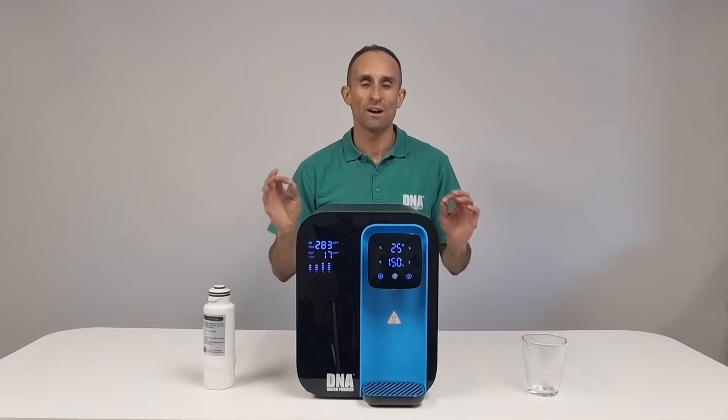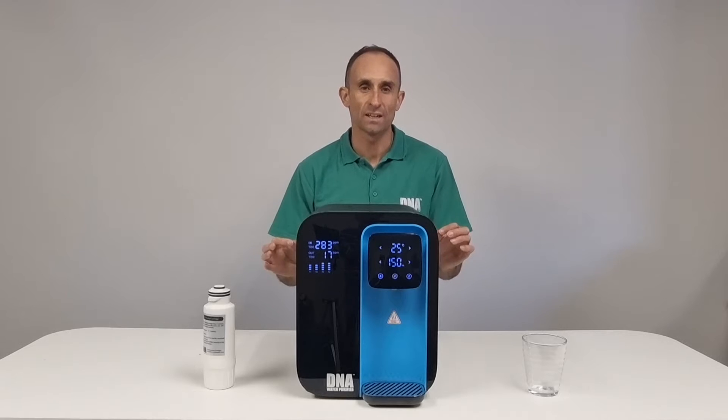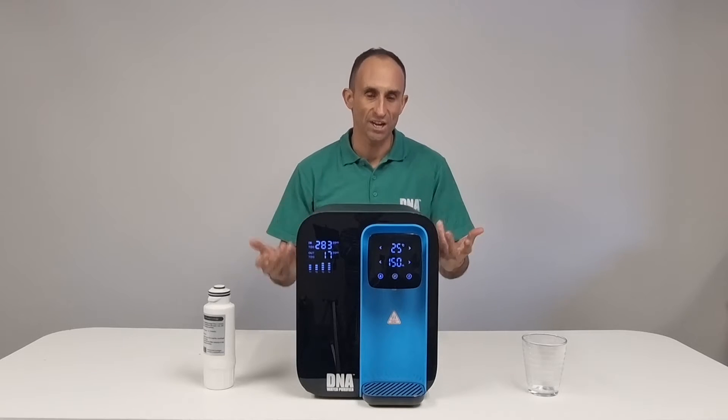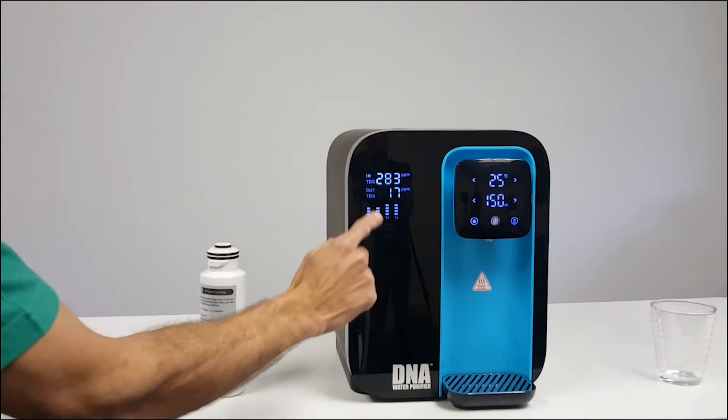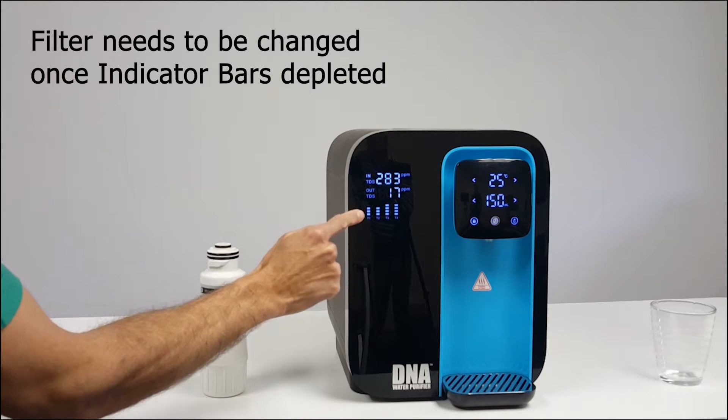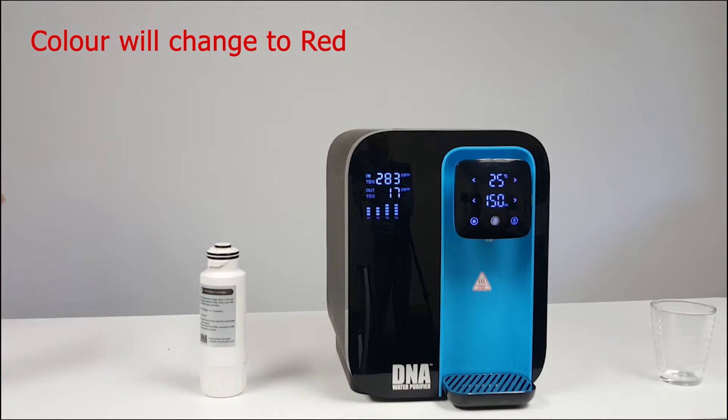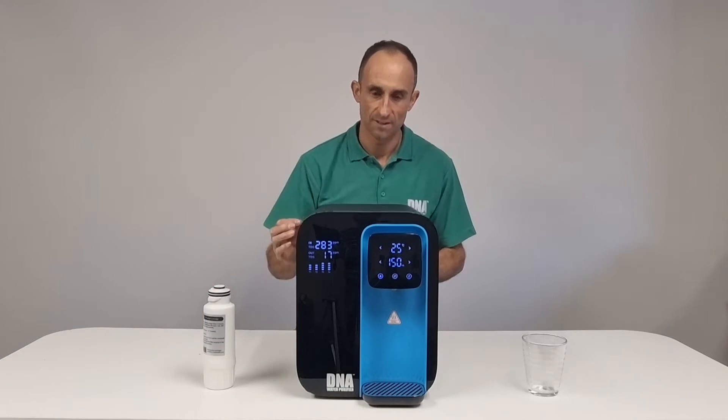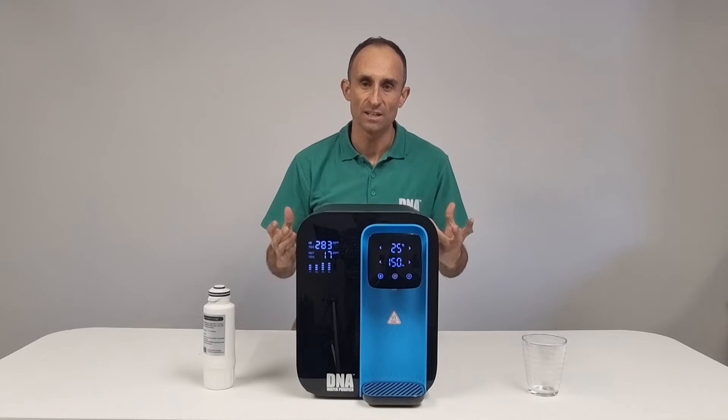Welcome to this video on how to change the filter on the DNA water purifier. When your filter needs changing, these little indicators will have depleted all the way to the bottom and the color will change to red. The last bar showing red indicates that the filter needs to be changed.